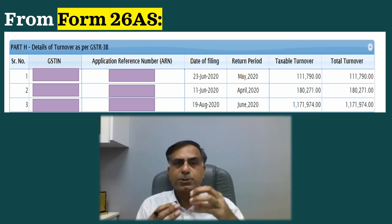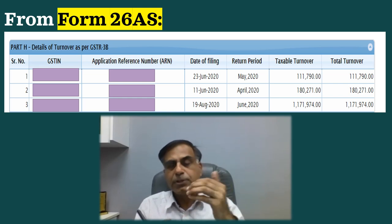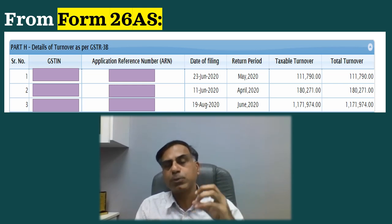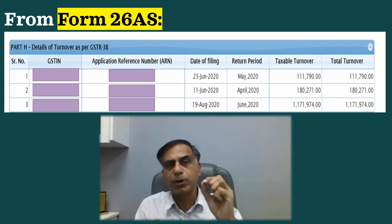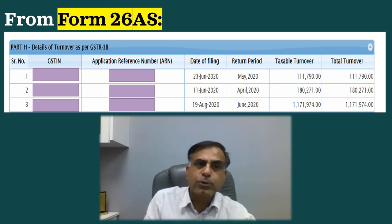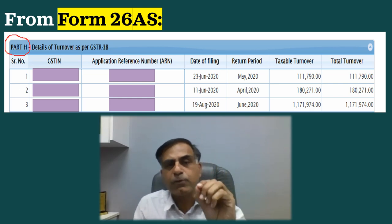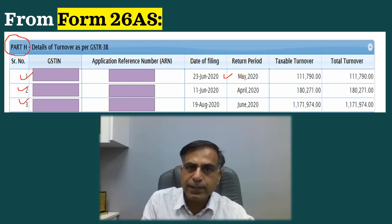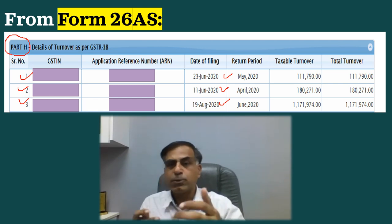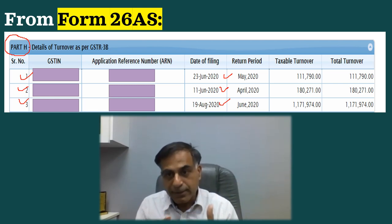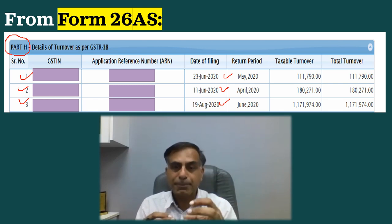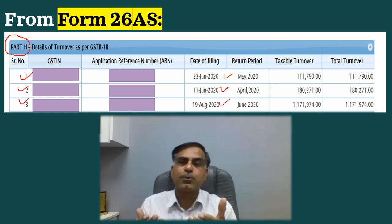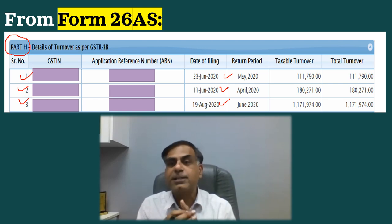There is one more option to check this. When you go to your income tax portal and log in, you can go to the page of Form 26AS. In Form 26AS, there is Part H, which contains details of turnover as per GSTR-3B. If there is a GST number linked to your PAN, you will find that GSTIN there along with any filed returns. If this is within your knowledge, no problem — but if it is without your knowledge, it is really alarming.